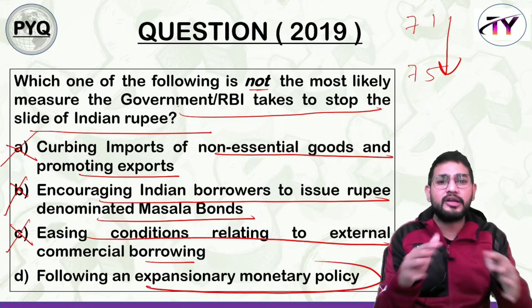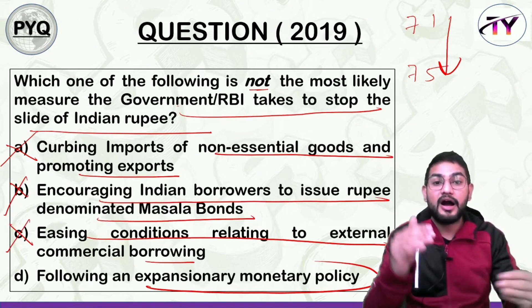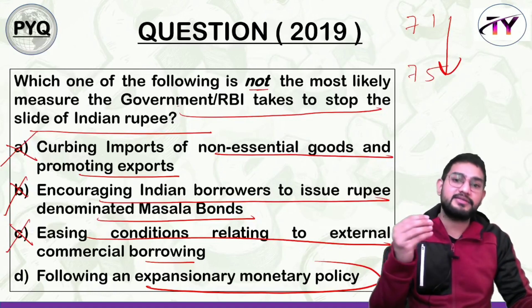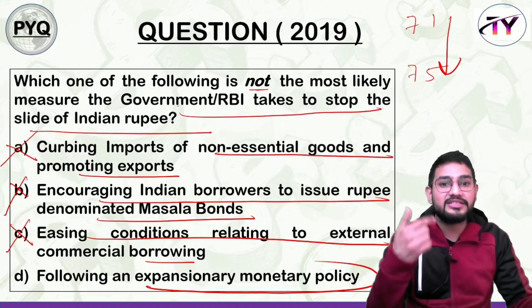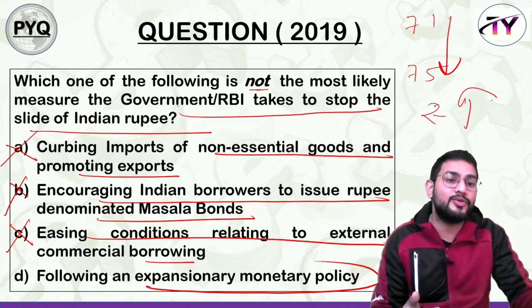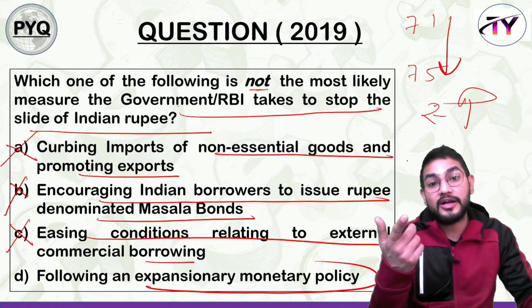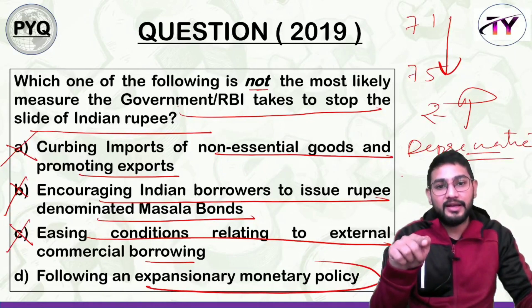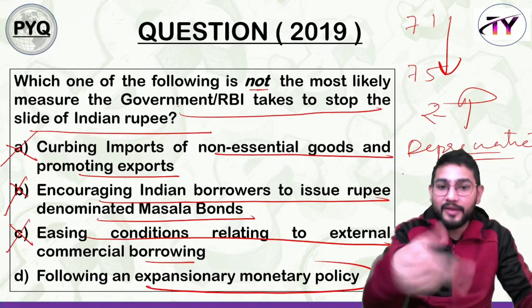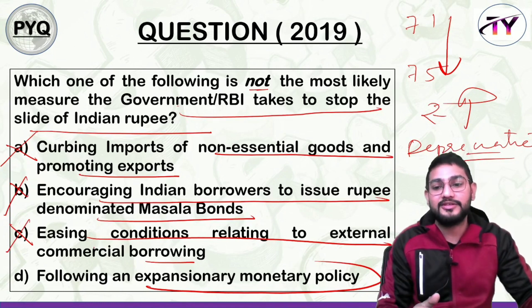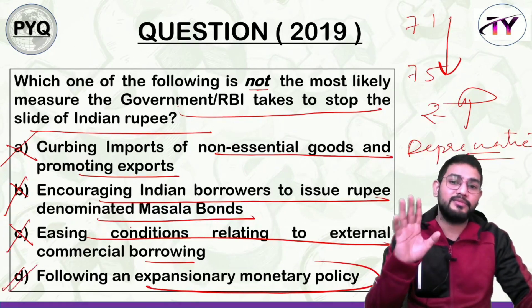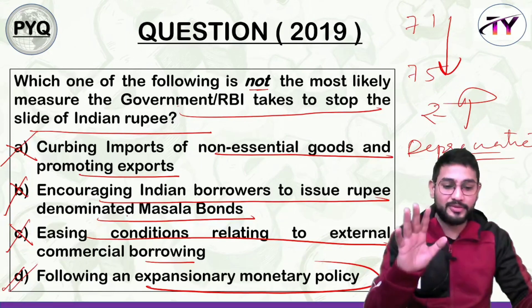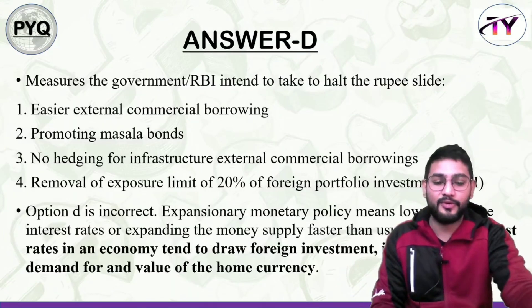Option 4: Following an expansionary monetary policy — this means cheap money policy where RBI reduces the benchmark interest rate, banks lend more, and money supply (rupees) increases in the market. When rupee supply increases, the rupee depreciates further — you cannot stop the depreciation this way. This is the step you should NOT take to stop rupee depreciation. So the answer is D.